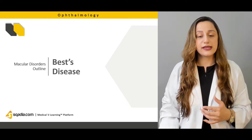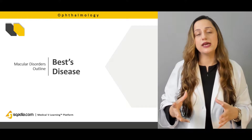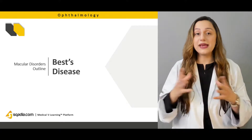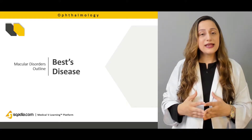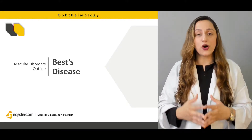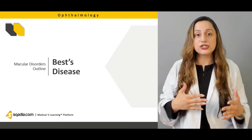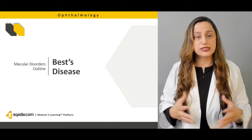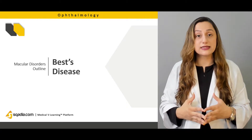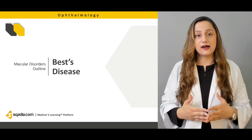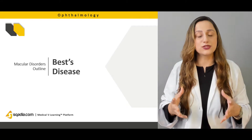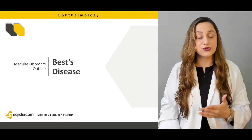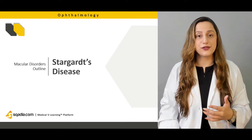We'll then move on to the syndromic conditions. For example, BEST disease — a syndromic condition in which we have macular detachments associated with other conditions in the body of the child. We'll discuss the clinical features, signs and symptoms mainly associated with this disease, and what treatment modalities are available for this kind of syndrome.